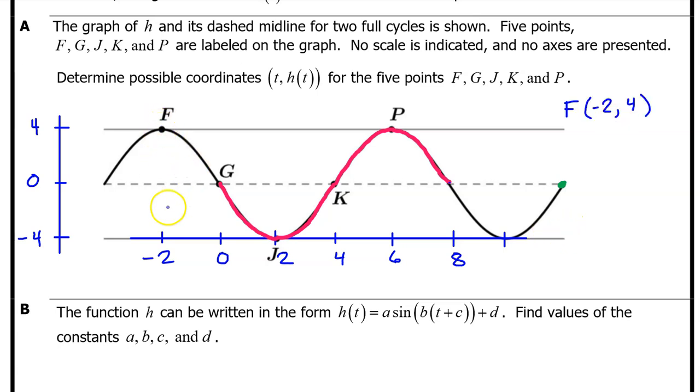Point F is at negative two comma four. G is at zero comma zero. Point J is at two comma negative four. Point K is at four comma zero. And point P is at six comma four. So that's it for part A.